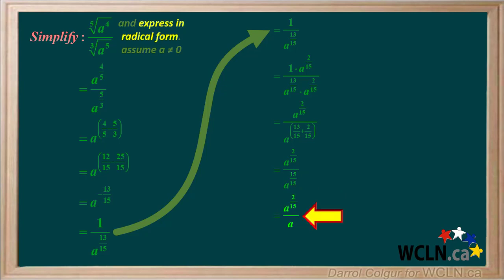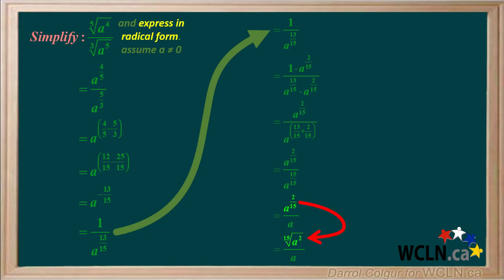So we're left with the expression a to the two-fifteenths divided by a. We were asked to express the answer in radical form, so we must convert the numerator a to the two-fifteenths to radical form. 15 is the index of the radical and 2 is the exponent of a, so a to the two-fifteenths is converted to the 15th root of a squared. Our final answer is the 15th root of a squared over a.